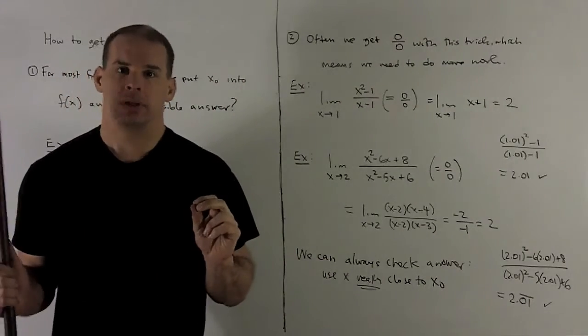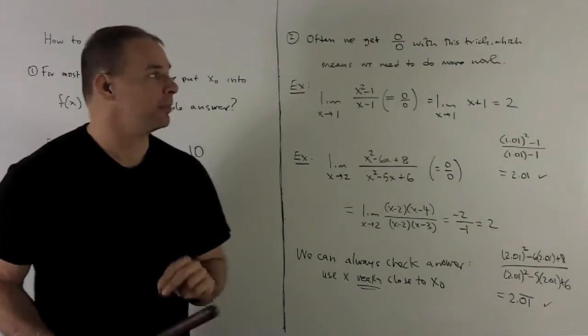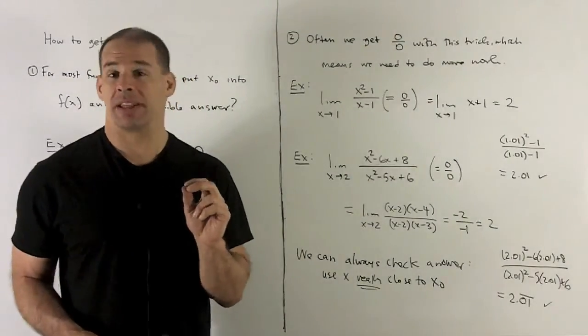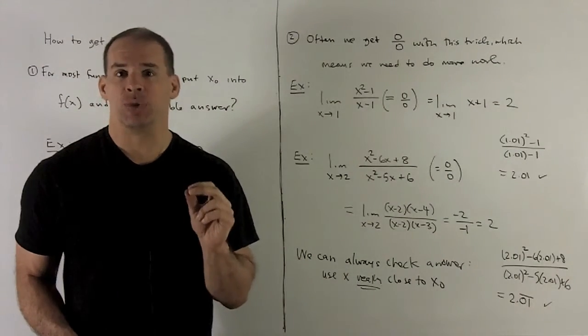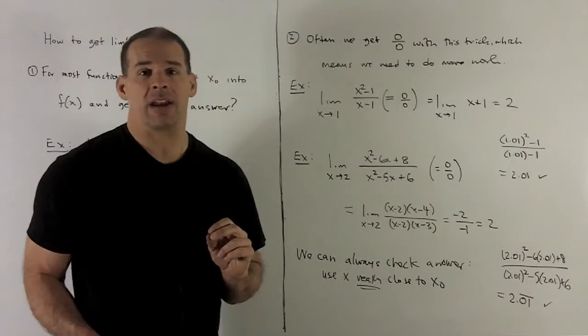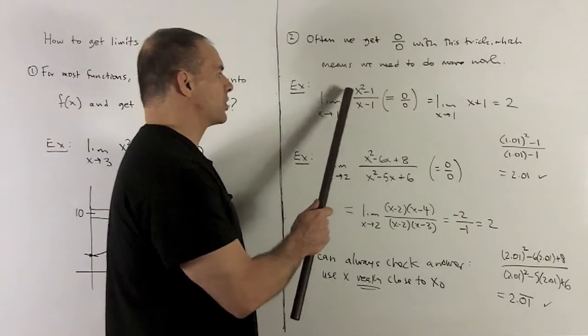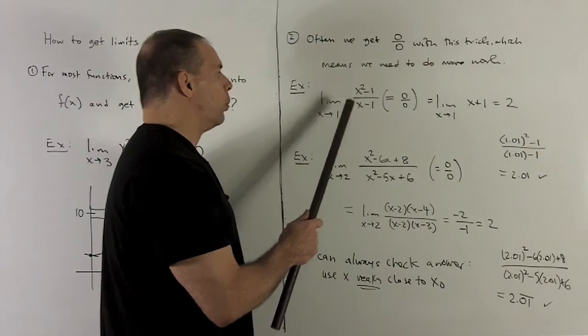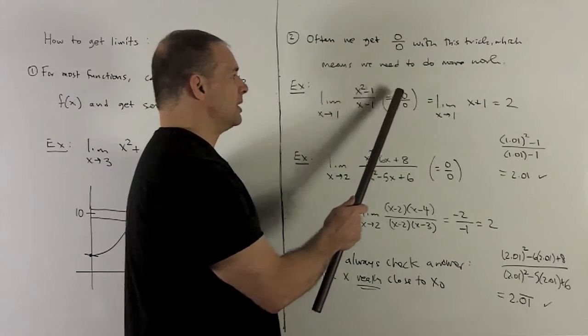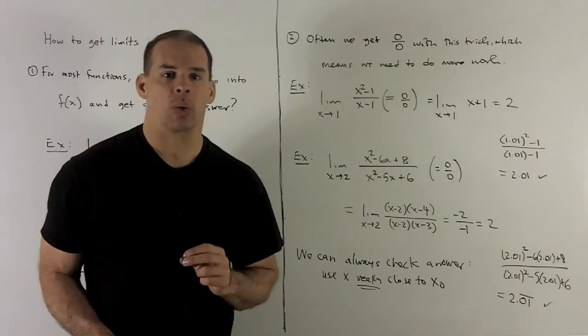Okay. This trick is going to work 90% of the time. For the rest of the time, what's going to happen, you're going to get something like 0 over 0. That's what I mean by something that's not sensible. And then we're going to have to do more work. So for example, let's take a look at our first example. Limit as x goes to 1 of (x² - 1)/(x - 1). I put 1 into here, and I'm going to end up with (1 - 1)/(1 - 1), which gives me 0 over 0. So 0 over 0 is the signal you need to do more work.